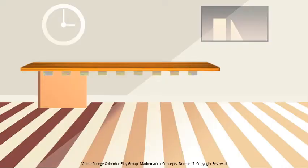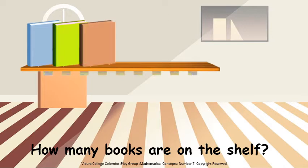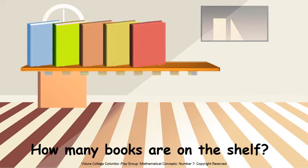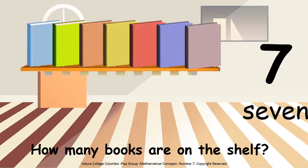Can you see a bookshelf? Shall we count and see how many books are on the shelf? 1, 2, 3, 4, 5, 6, 7. There are 7 books on the shelf.